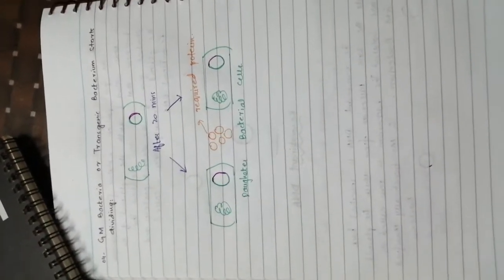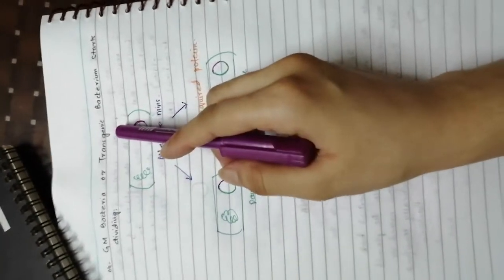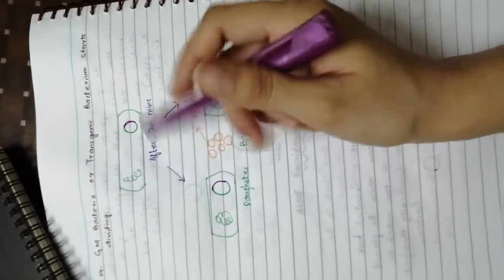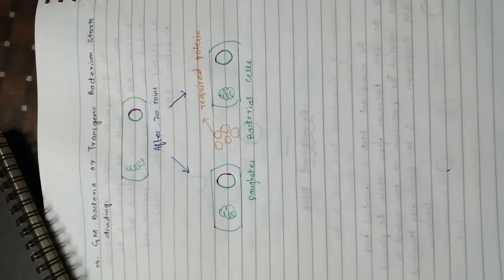In the fourth and final step, we are going to allow that GM bacteria or transgenic bacteria to divide. We call this GM bacteria or transgenic bacteria because it contains DNA from the outside. We allow it to divide.